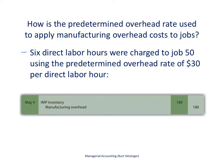To extend the example, assume that six direct labor hours were charged to Job 50, a particular table we are working on. Using the predetermined overhead rate of $30 per direct labor hour, we apply $180 in overhead to this job. The journal entry to record this is: debit Work in Process Inventory $180 — an asset account being increased — and credit Manufacturing Overhead $180.